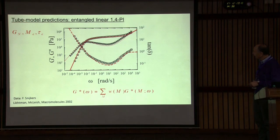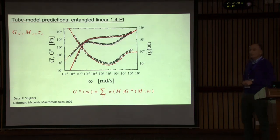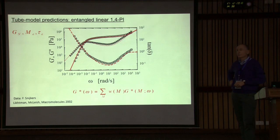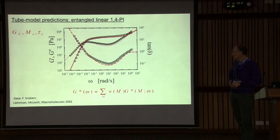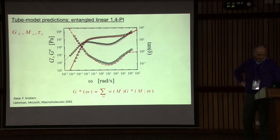You can see this better in the tan delta, which is more sensitive. This is the main success of the tube models, and this theory is now available in free software due to Likhtman and McLeish.